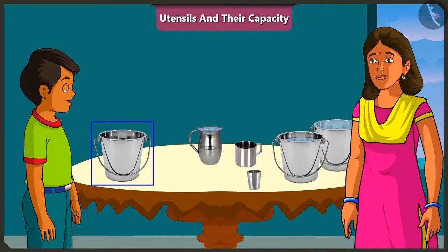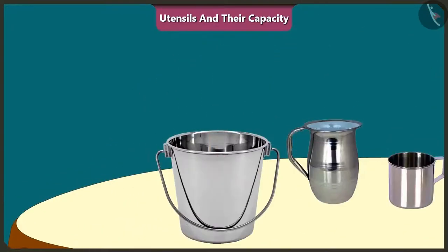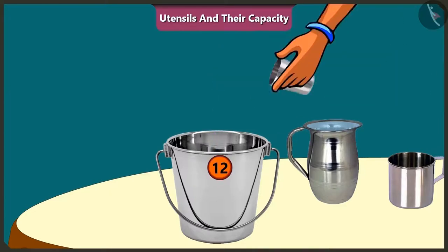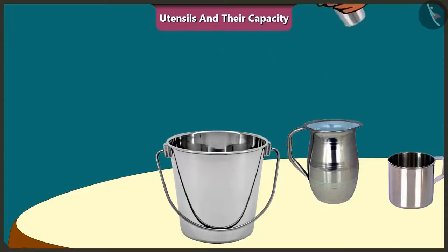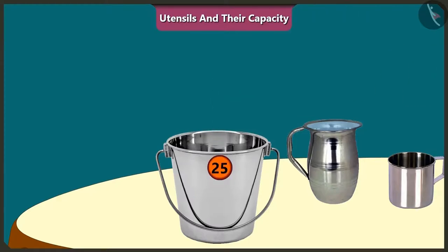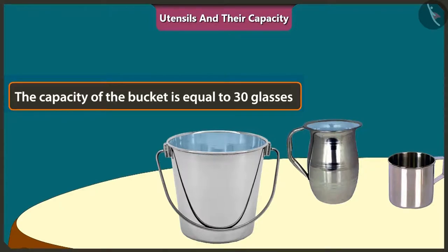Now, to fill this bucket, how many glasses of water would be required? Come on, let's pour and see. Counting 1 through 30 — to fill this bucket completely, we have to pour 30 glasses of water in it. So the capacity of this bucket is equal to 30 glasses of water.